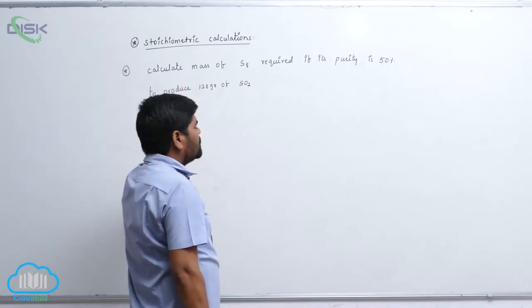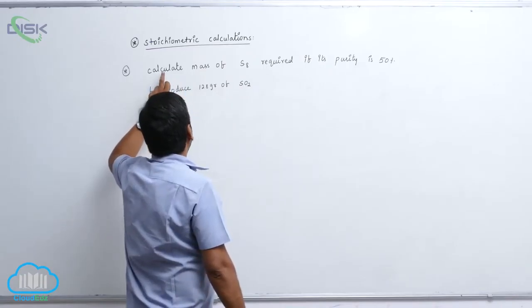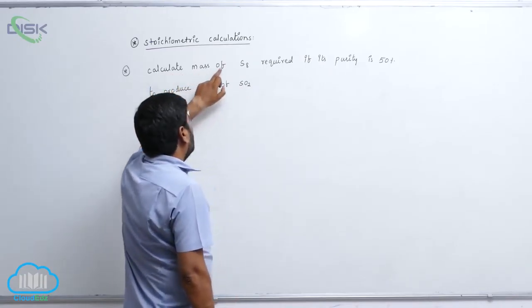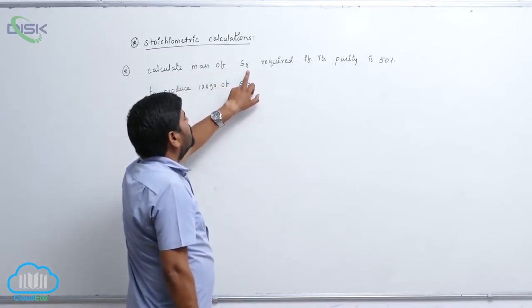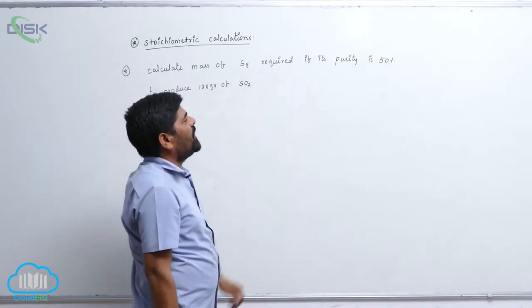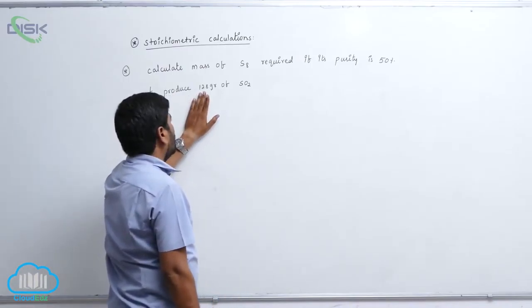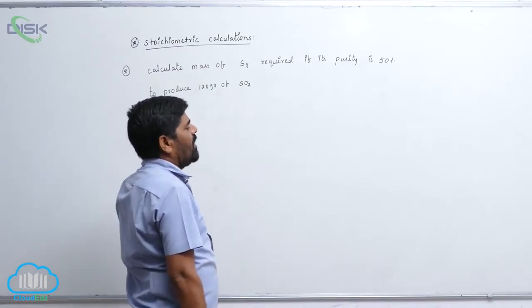The one more important type of problems related to this one: stoichiometric calculations. Calculate mass of S8 required if its purity is 50% to produce 128 grams of sulfur dioxide.